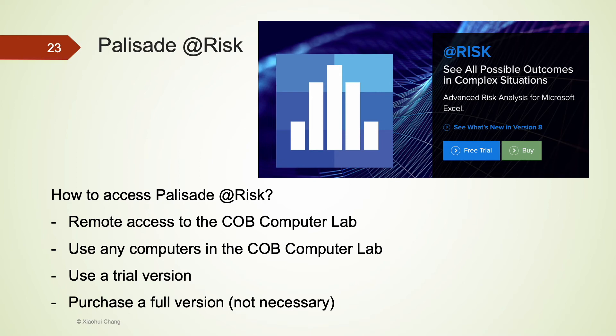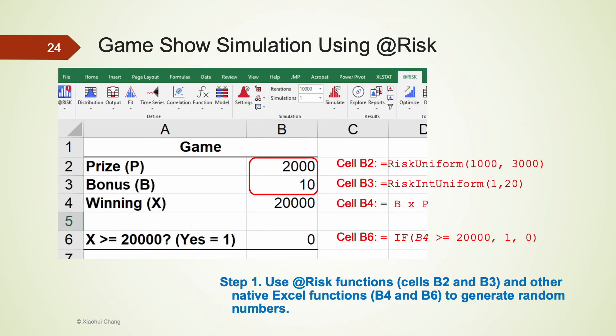I also trust that you know how to load @Risk in Excel using the instructions provided on our course site. Let's take a look at how to set up this problem using @Risk. Always be sure to check to see whether @Risk has already loaded in Excel. Using @Risk to simulate business scenarios, there are usually five steps. In step one, we identify variables that influence the final outcomes and use @Risk and Excel functions to generate these variables. In our game show simulation, these variables include price, bonus multiplier, winning, and also a logical test to see whether the winning is more than $20,000.